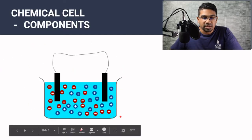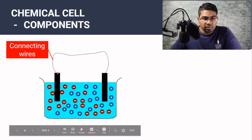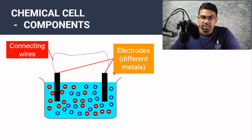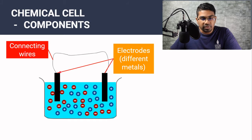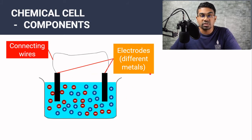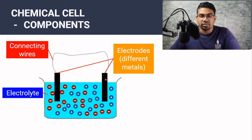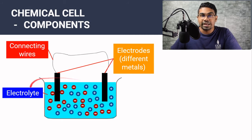This is a setup of a simple chemical cell. Let's look at the components first. We have connecting wires connecting two different electrodes. These electrodes are made up of different metals — if the electrodes are made up of the same type of metal, the chemical cell will not work. This is one of the differences with an electrolytic cell, where electrodes can be made up of the same type of metal or any other conductor. Then we have both electrodes immersed in an electrolyte.